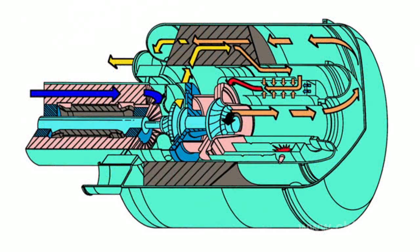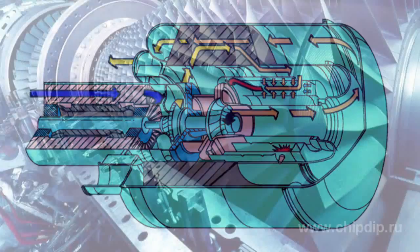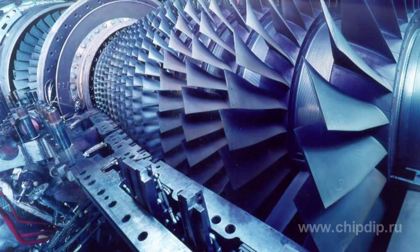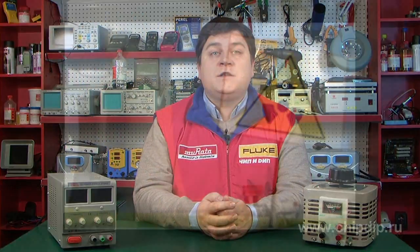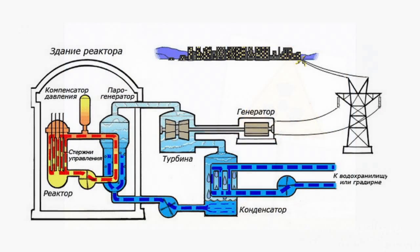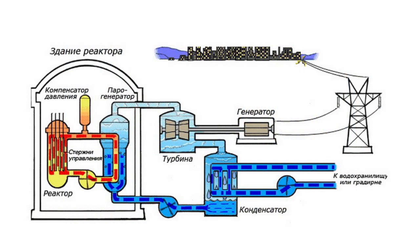Gas turbine thermal power stations have higher efficiency, where a mixture of air and gas is ignited and the resulting flow of hot mixture is fed to the shaft. In such a modern type of power plant as an atomic power station, the energy of nuclear fission in a reactor is used to heat the coolant, a process accompanied by heat release.